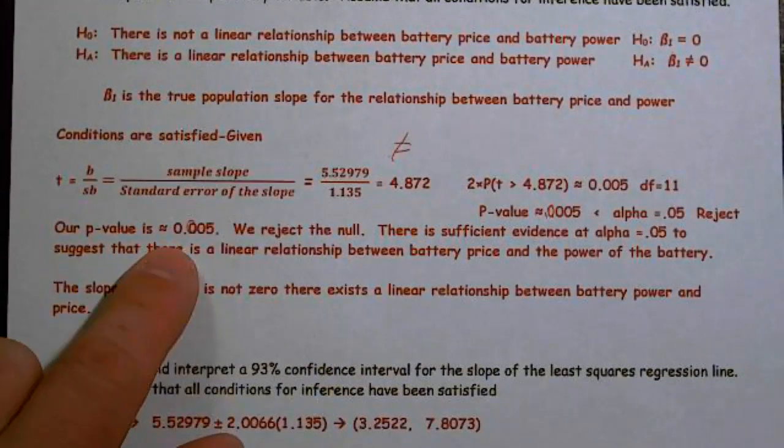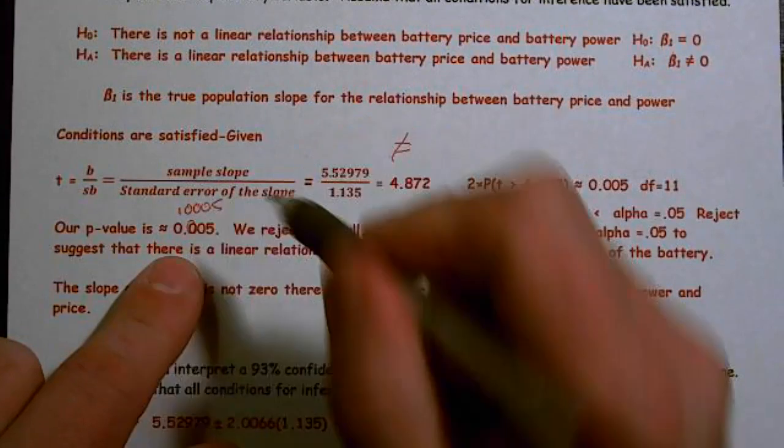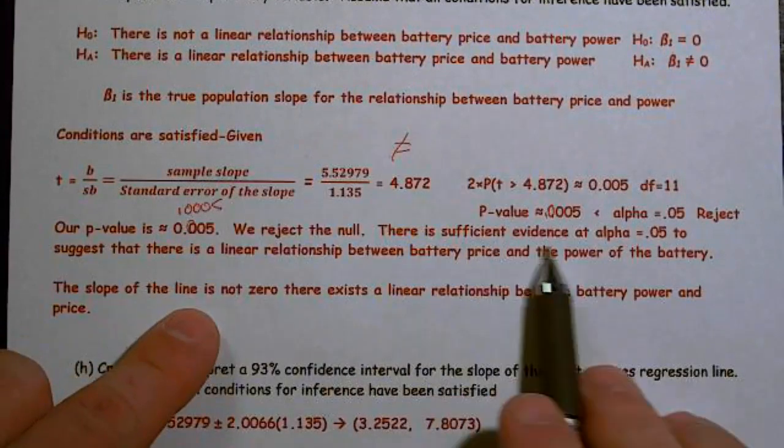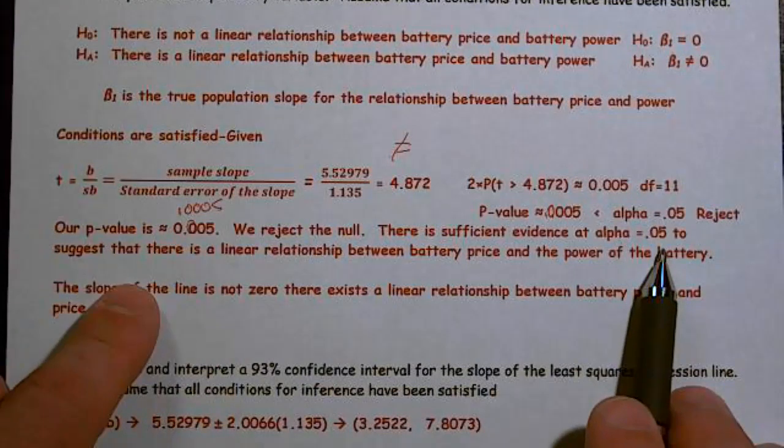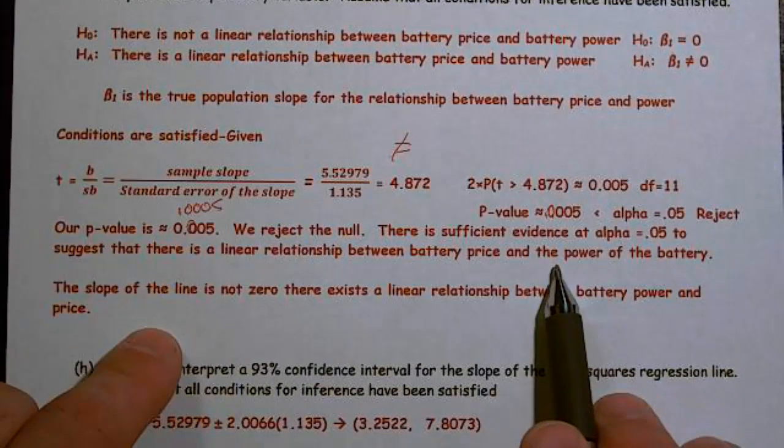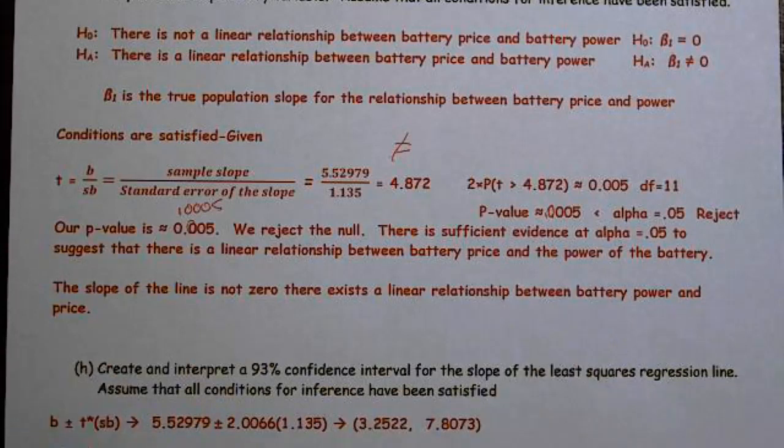Our p-value is 0.005. We reject the null. There is sufficient evidence at alpha equals 0.05 to suggest that there is a linear relationship between battery price and the power of the battery. The slope of the line is not 0. There exists a linear relationship between battery power and price.